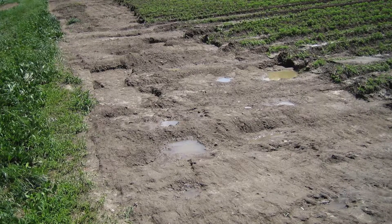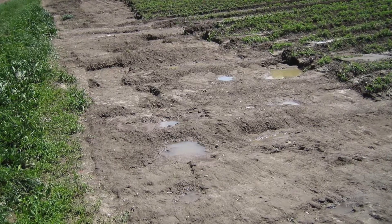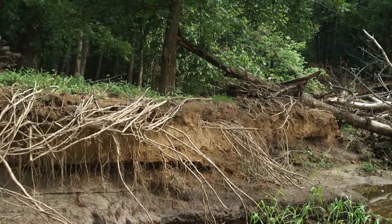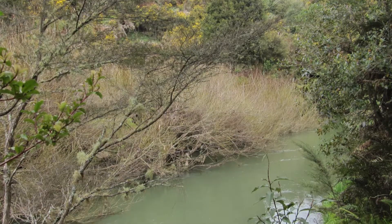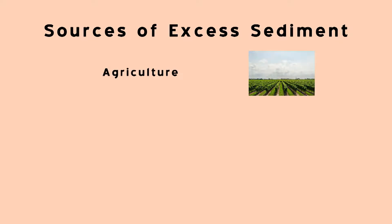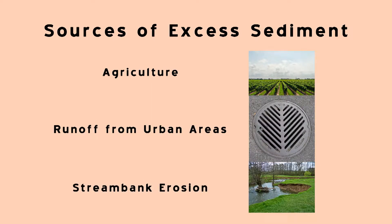Sediment is naturally present in aquatic ecosystems and is an important part of the system. However, human activities can lead to excess sediment in lakes or streams. Excess sediment disrupts natural ecosystem processes and can reduce water quality. There are three main sources of excess sediment in the Lower Grand River watershed: agriculture, runoff from urban areas, and stream bank erosion.